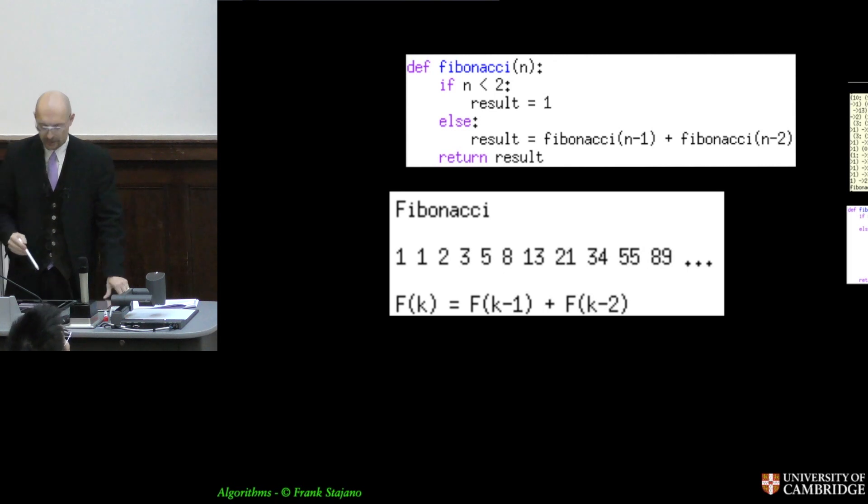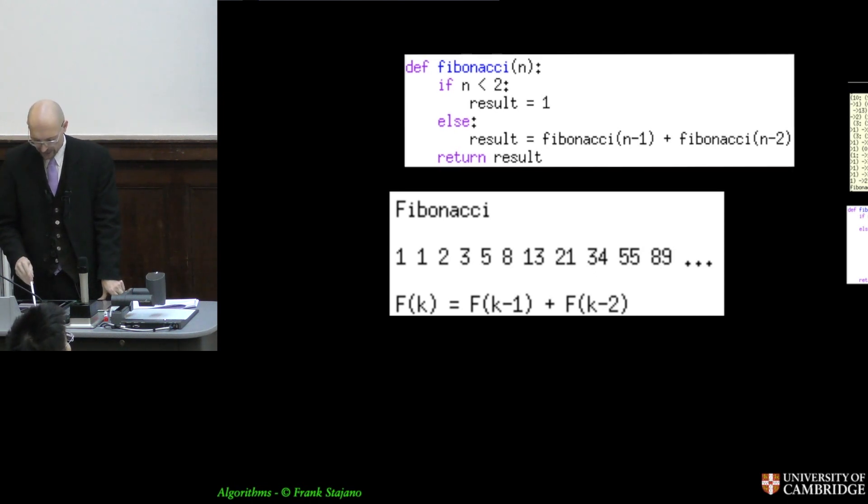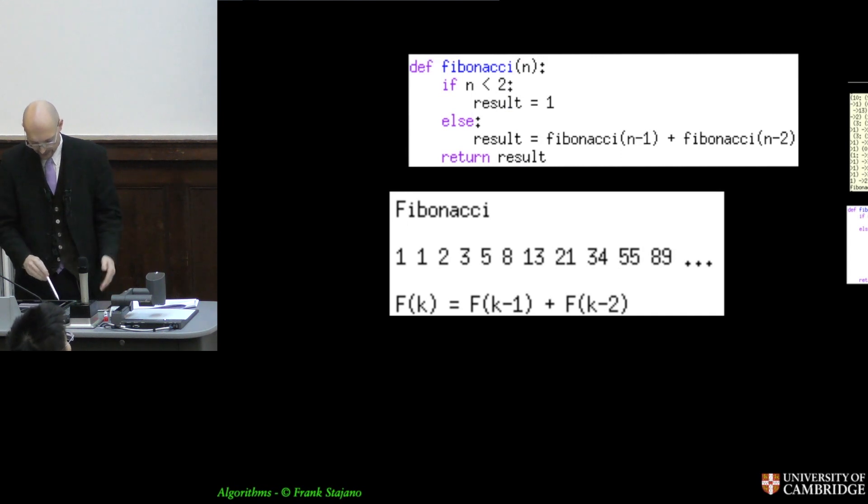When you become a computer scientist or a budding computer scientist and you get exposed to recursion, then your brain gets polluted into thinking that it's cooler to compute them in reverse by saying, okay, give me the 30th Fibonacci number. So Fibonacci of n equals 30. If n is less than 2, then I can find the answer very easily because it's at the bottom. But otherwise, the result is going to be the sum of Fibonacci of 29 and Fibonacci of 28. And then when I finish with that, I will do the 28 and I will add it up.